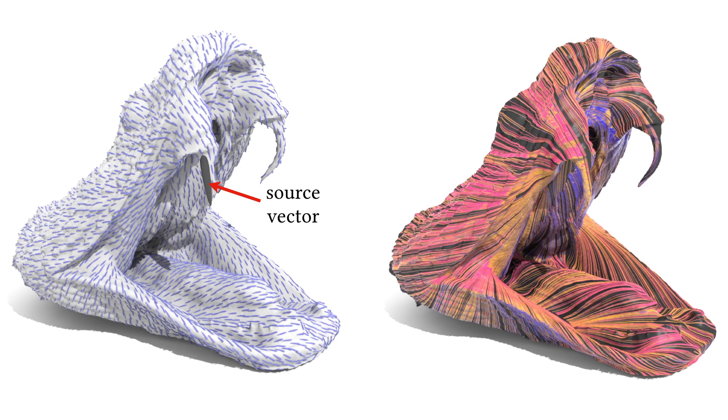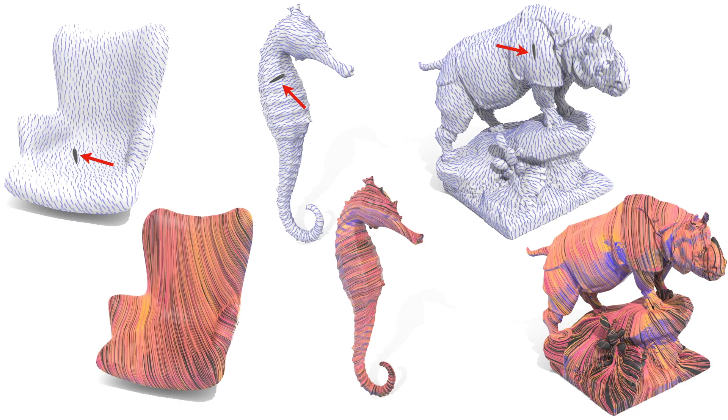Here's an example where I've shown the parallel transport of a source vector located on the fane across this entire model, as well as some more examples of parallel transport where in each case we're transporting a single vector across the entire domain using our scheme.